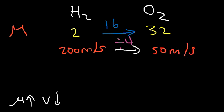So here we have an inverse square root relationship. Whenever the molar mass of a gas goes up, the velocity goes down. Now we're going to focus on deriving the equation — where does it even come from?